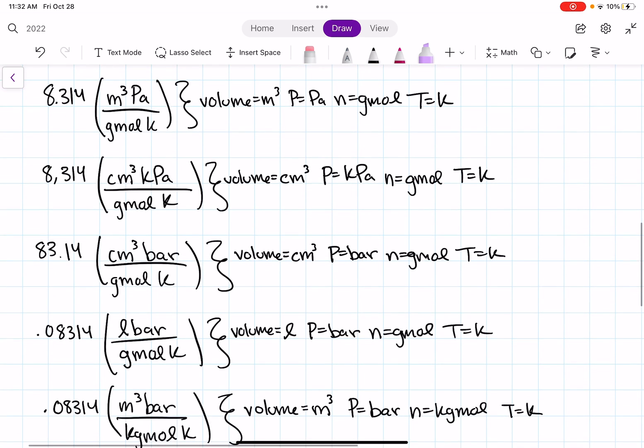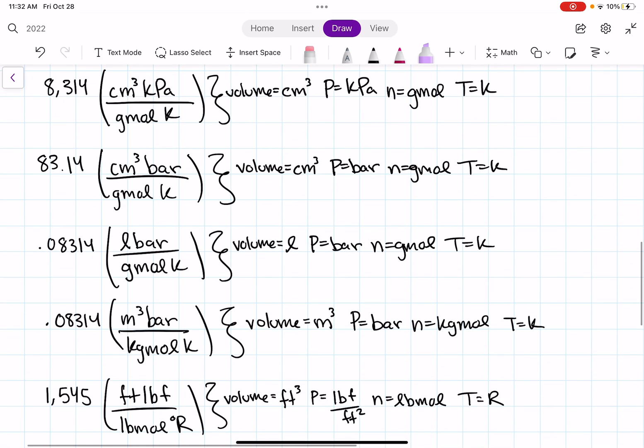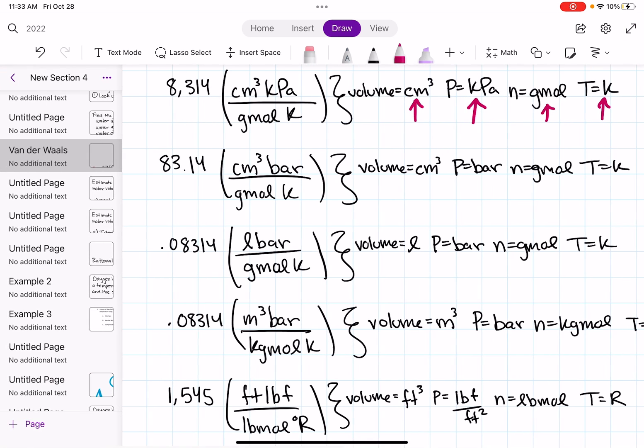Meters cubed. Oh, and I think I'm going to use this one. We have our volume in centimeters cubed. Our pressure in our problem is given in megapascals, but we can convert into kilopascals. Our moles are in gram moles, so we're going to have to convert our kilograms into grams. And then temperature is in Kelvin. So, so far, so good. We're just going to have to do some simple conversions.